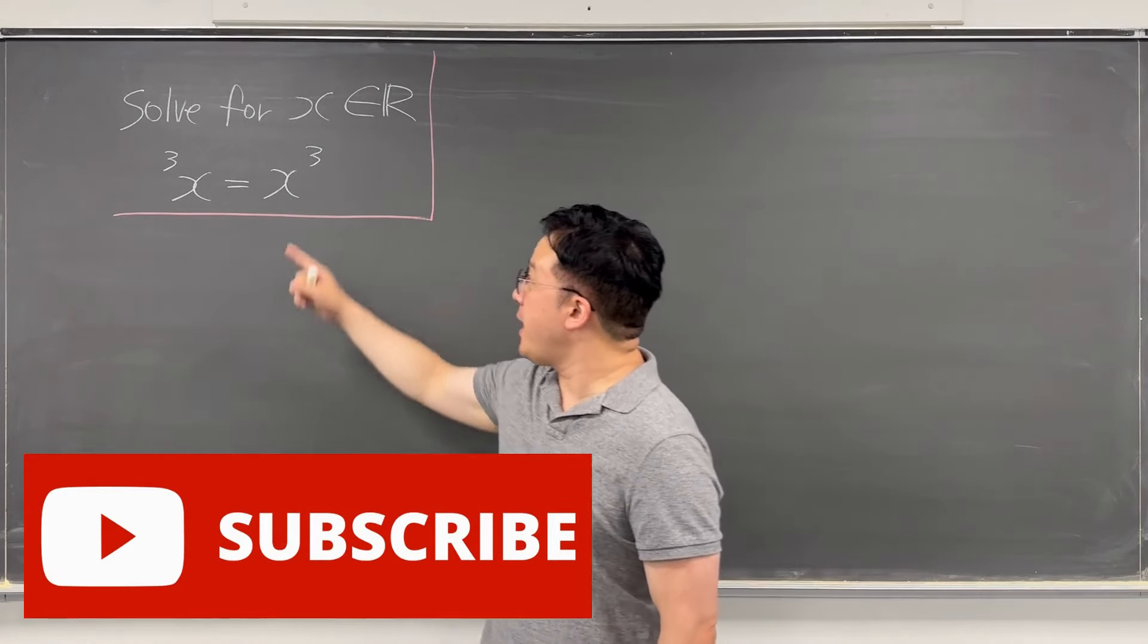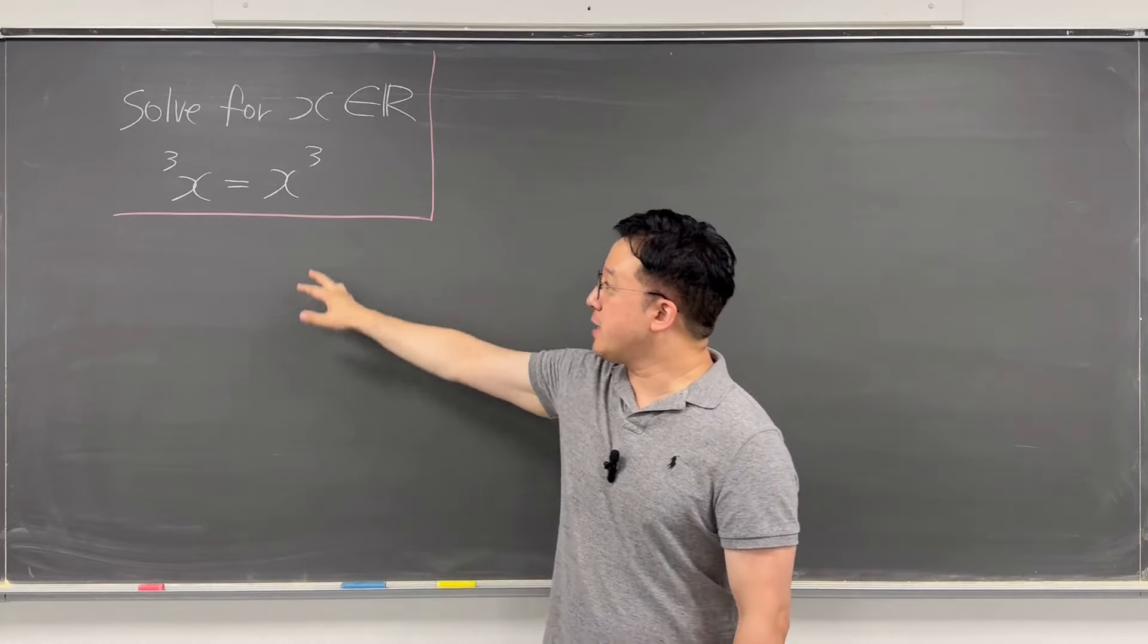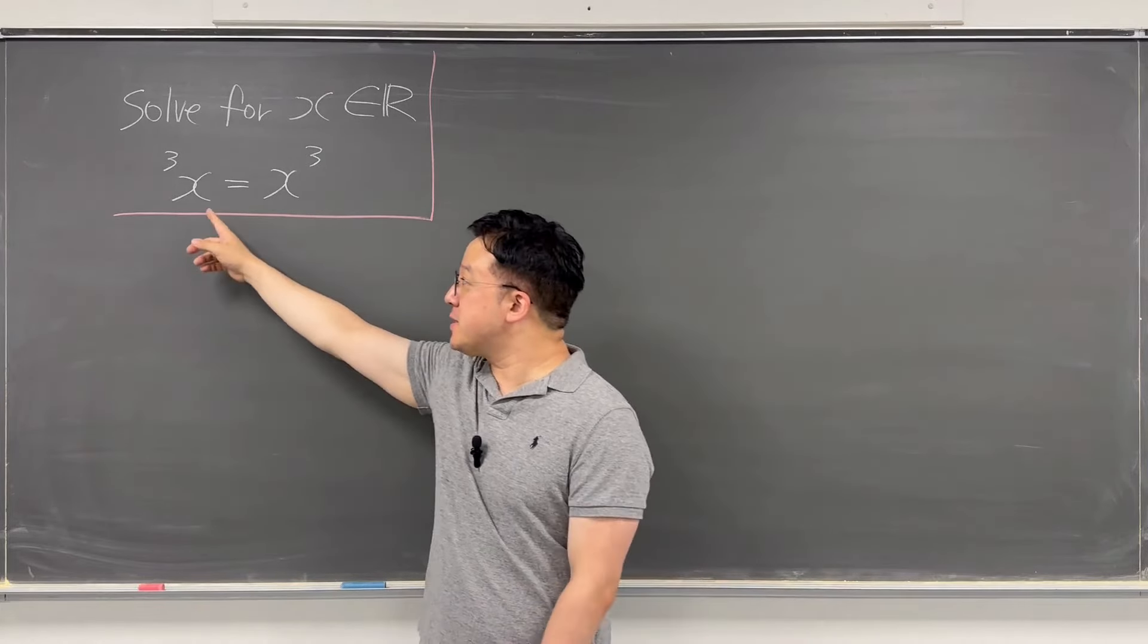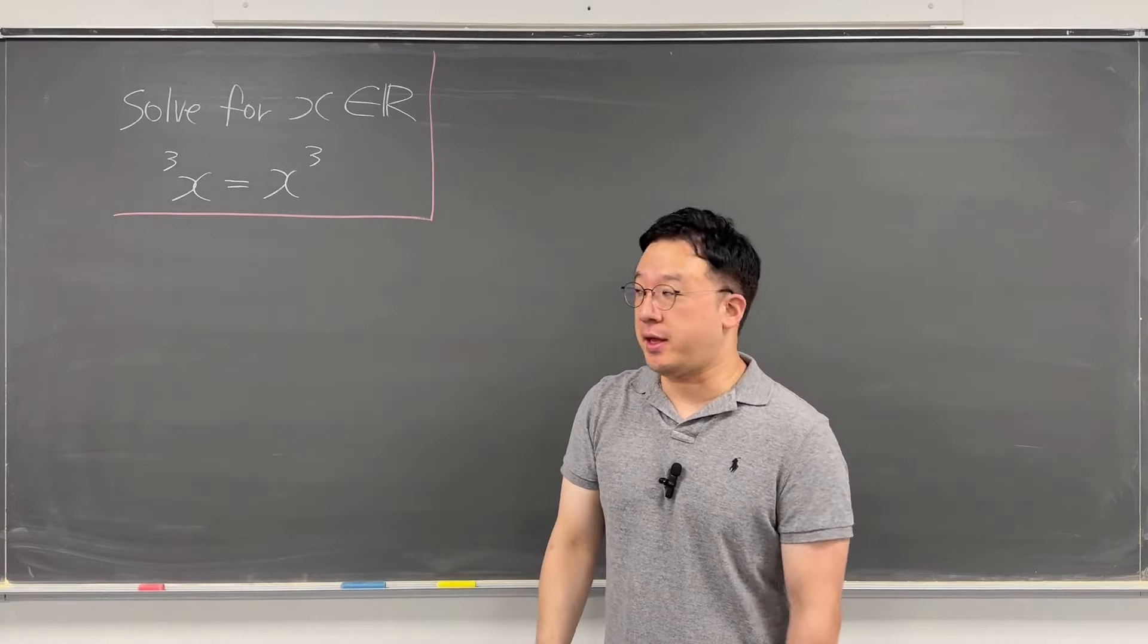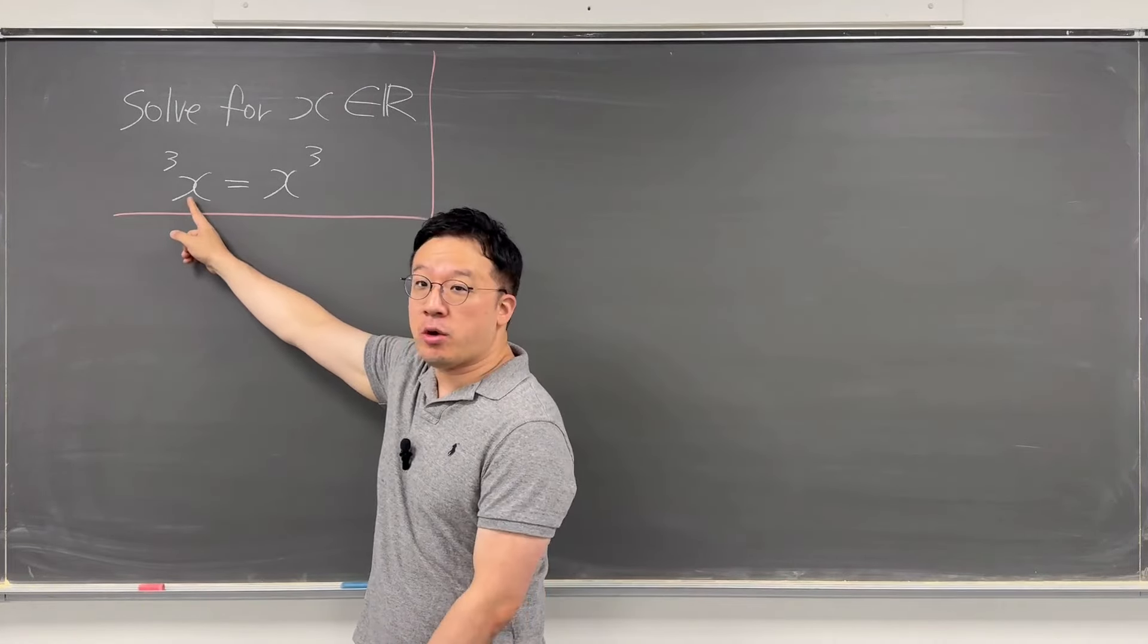Okay, here's the question. The question is solve for x as a real number, and this is our equation. The right-hand side is only x cubed, but for the left-hand side, some of you might not be familiar with it. So this left-hand side, meaning you need to raise this base to the power of the same term. For how many times?